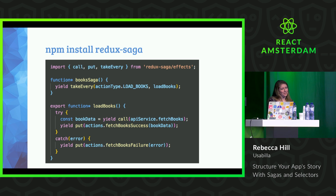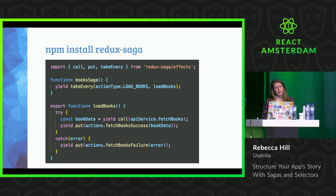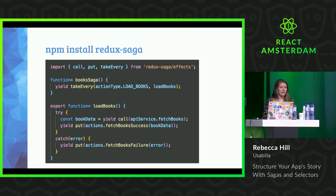Redux Saga uses generator functions, which you can see from the functions with the asterisks by them and the keyword yield. They allow sagas to be like a separately running thread in your application, and they mean that your code can be read like standard synchronous JavaScript — kind of like async/await, but with a few more awesome features. Here we have a book saga which takes every load books action dispatched in the application and calls load books. Load books calls our API service to fetch the list of books and returns it into the book data variable. The function waits for that to complete, and if successful, it dispatches fetch book success, and if there's an error anywhere, it dispatches fetch book's failure.